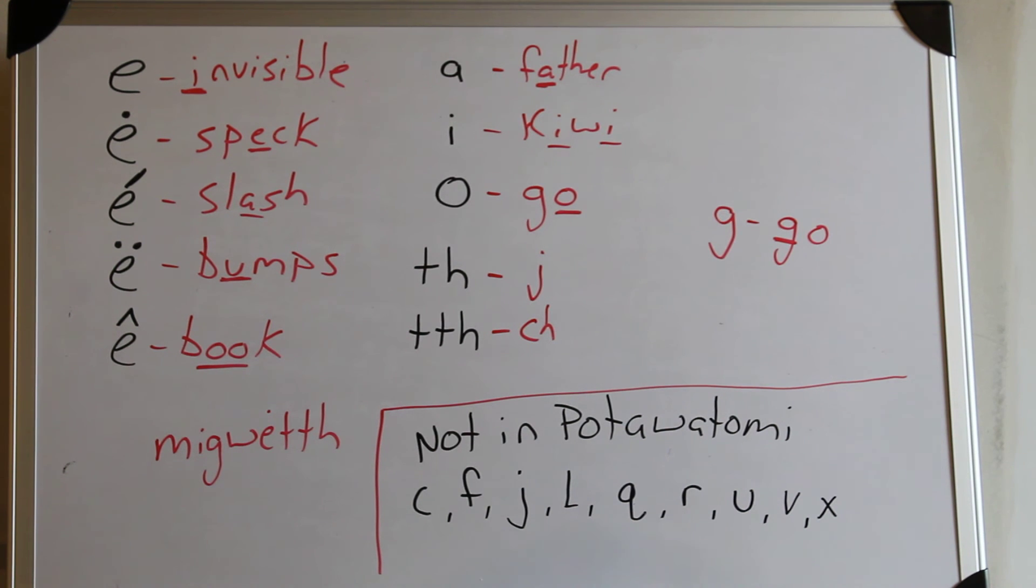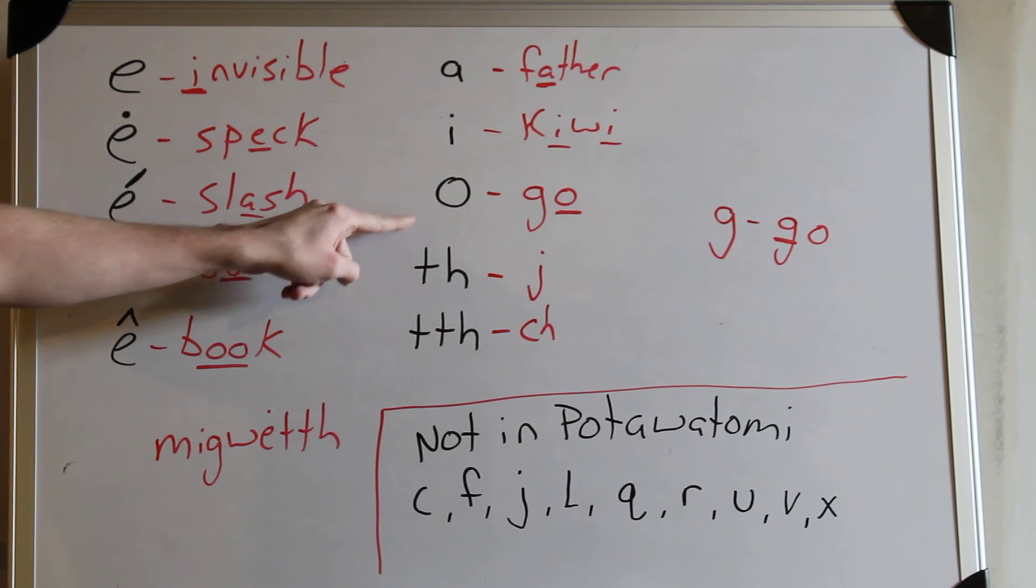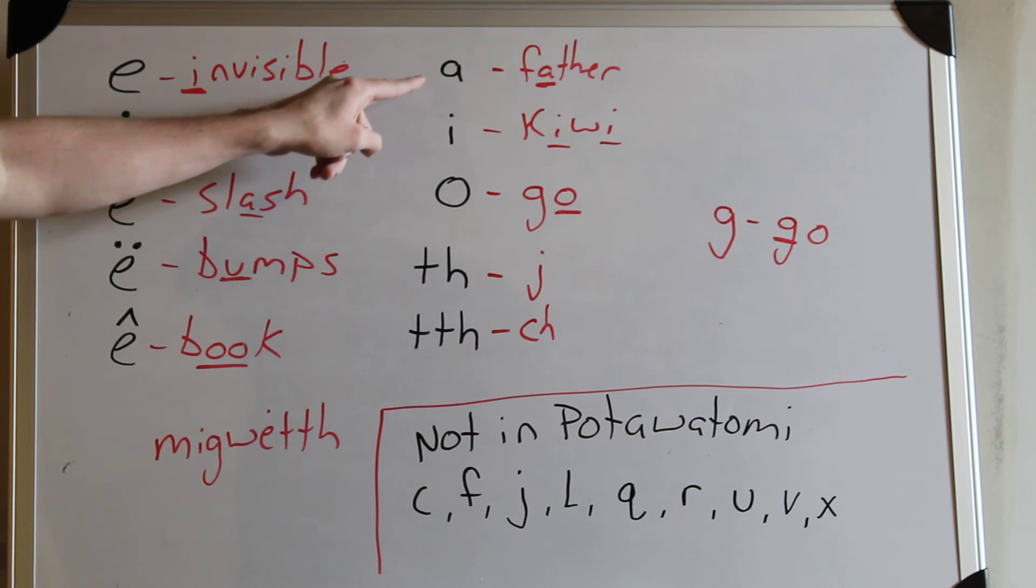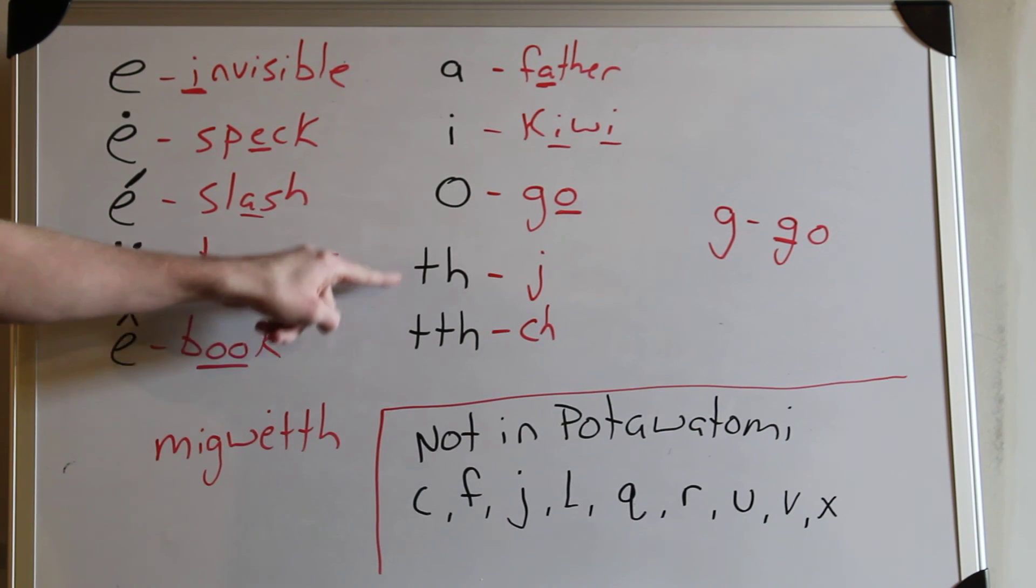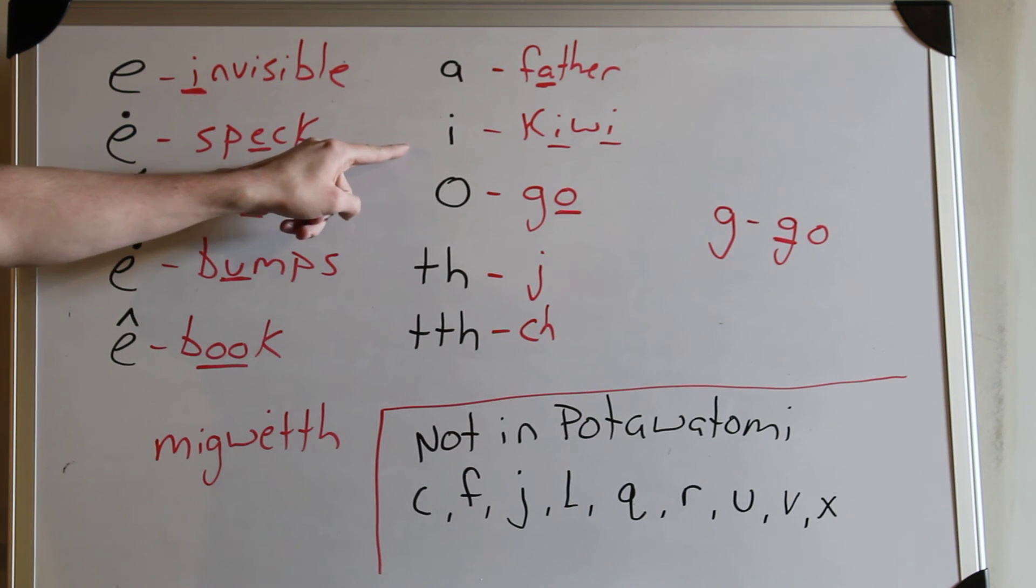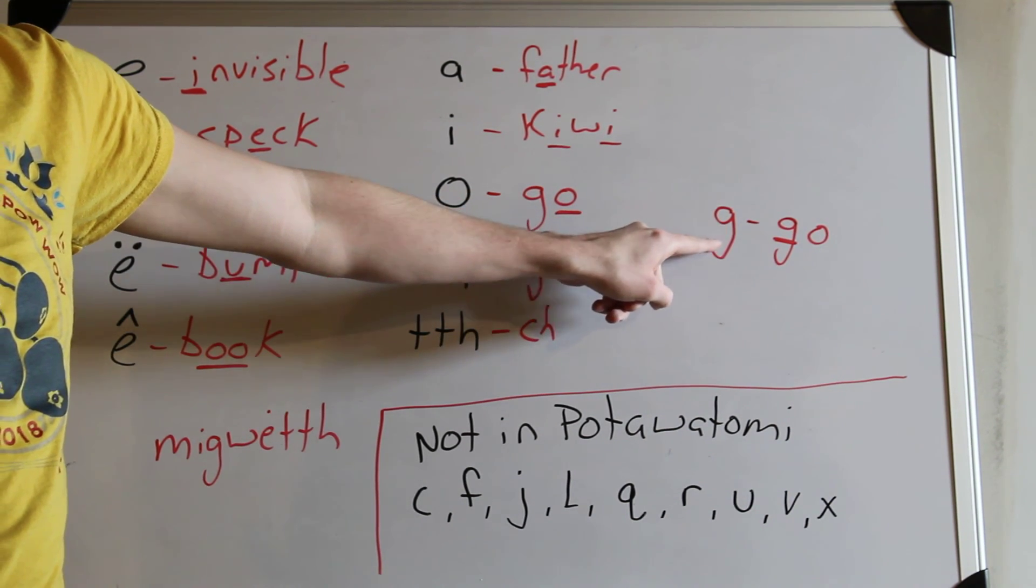So now we'll go through and we'll say these things: I, eh, ah, uh, uh. A, I, O, J, CH. A, E, O, J, CH. G, G, G.